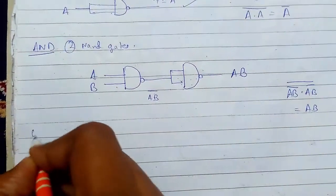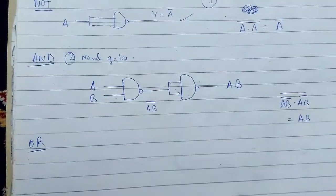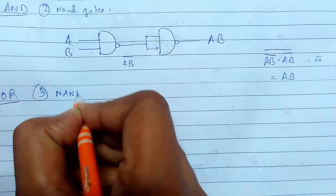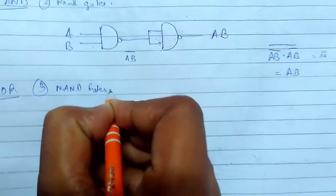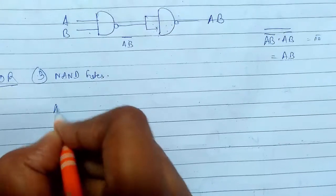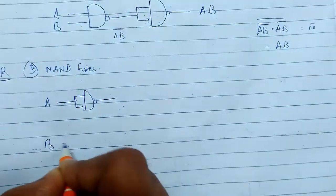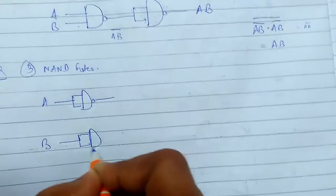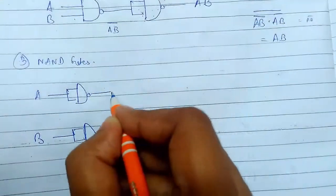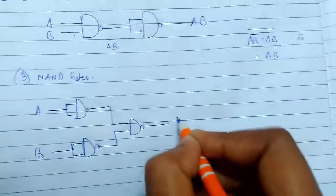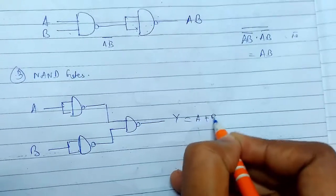Now we will see the OR gate. For derivation of OR gate we will be using three NAND gates. So I will just draw the circuit. This is our two NAND gates, and simply we do this. We get our result as A plus B.